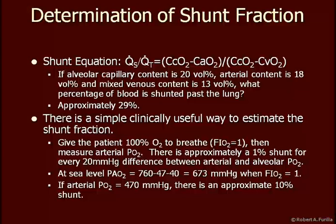At sea level, the barometric pressure is 760 millimeters of mercury. Water vapor pressure at any altitude is always 47 millimeters of mercury when body temperature is 37 degrees Celsius. So we have to subtract 47 millimeters of mercury from our total pressure. And there's approximately 40 millimeters of mercury of CO2 in the alveoli.